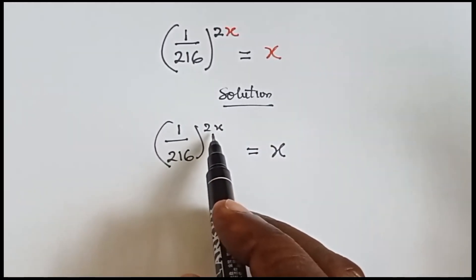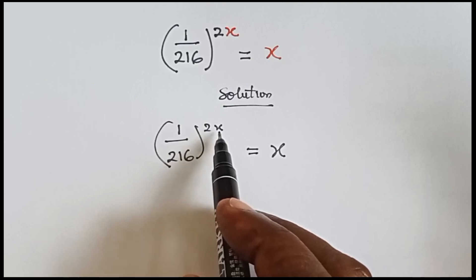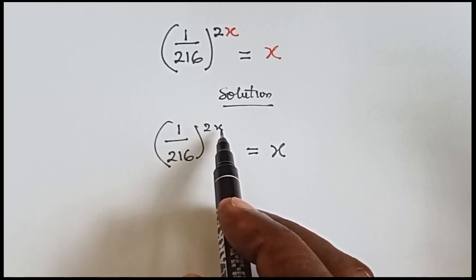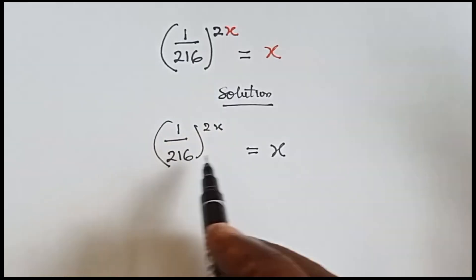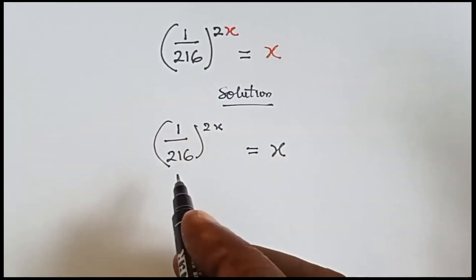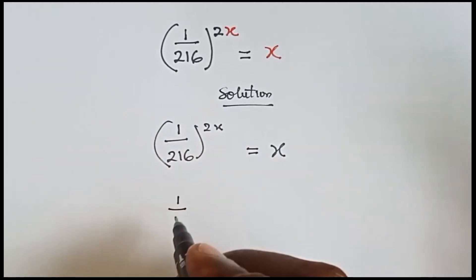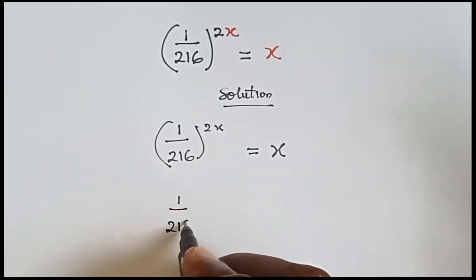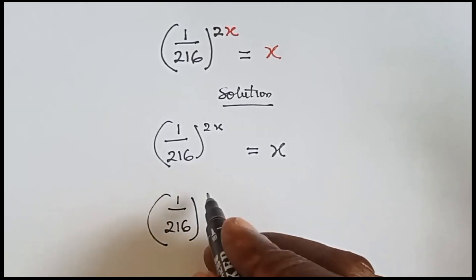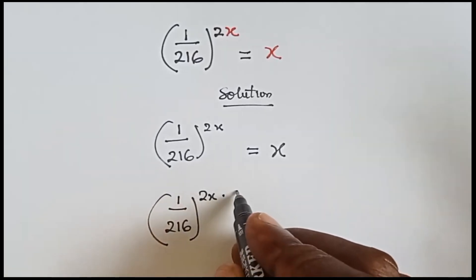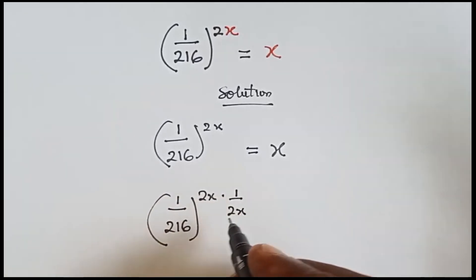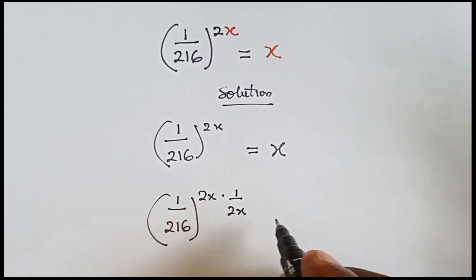One way to eliminate this 2x is to multiply it with the reciprocal, which is 1 over 2x. So it means that we should add 1 over 2x to both sides. To this side we have 1 over 216, and we have 2x multiplied by 1 over 2x, which is reciprocal.